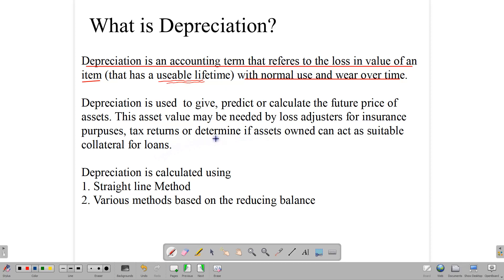Now, there are some things that do not depreciate in value. Those things are, for example, land and art. And then there are some things that depreciate in value, such as electronics and machinery. Depreciation is calculated using generally two methods: the straight line method and various methods based on reducing balance.